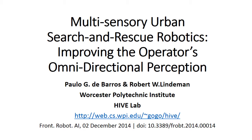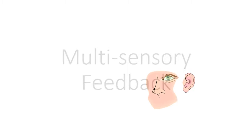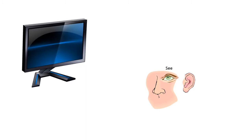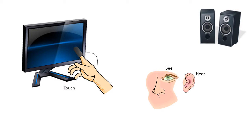This presentation is about Multisensory Urban Search and Rescue Robotics, focused on improving the operator's omnidirectional perception. In a multisensory feedback system, the user of an interactive system can receive feedback from multiple senses, not only vision. Data can be spatialized and perceived by the user from around him, not being limited to the area available on a computer screen.